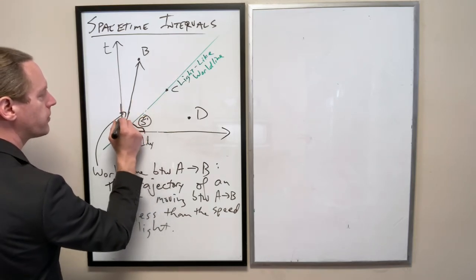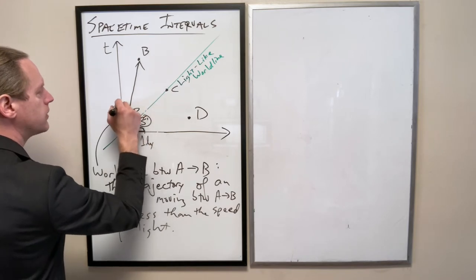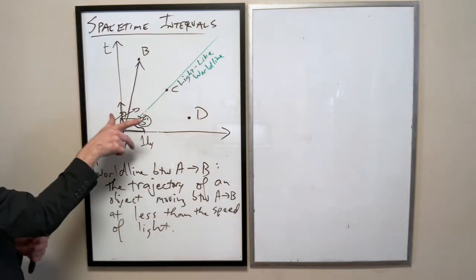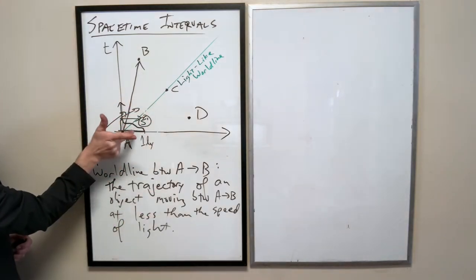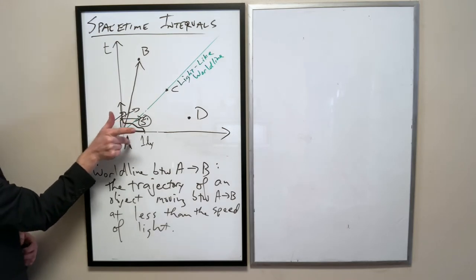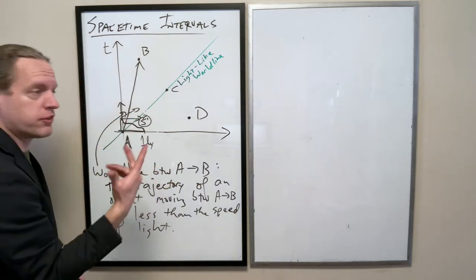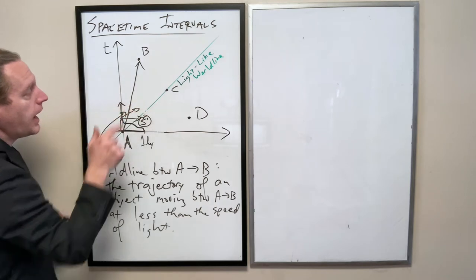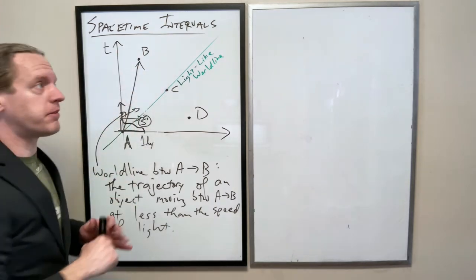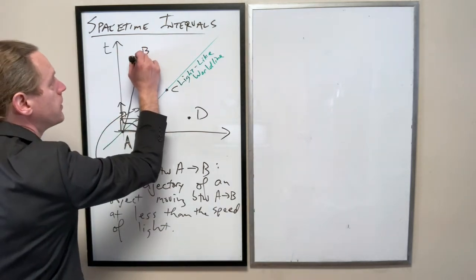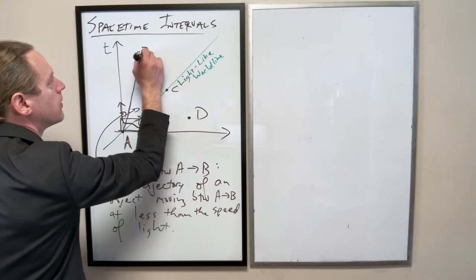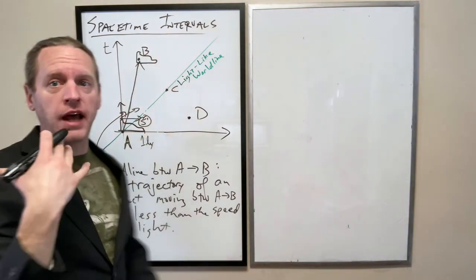Reference frame S prime at exactly that moment was at the origin, at its own origin, I should say. And then as that spaceship moves at some velocity, at some later time, it's going to be located at exactly event B.